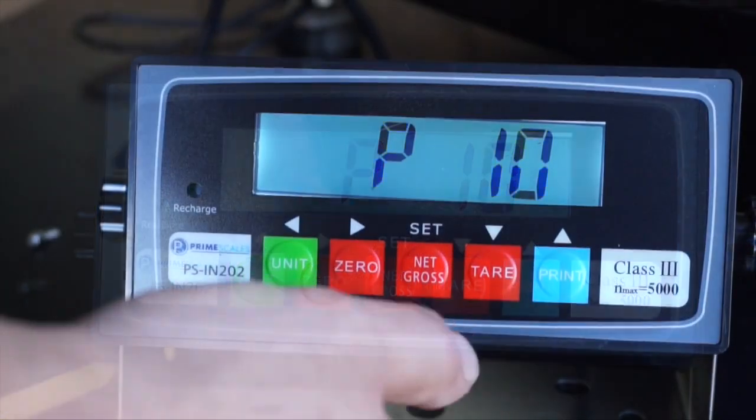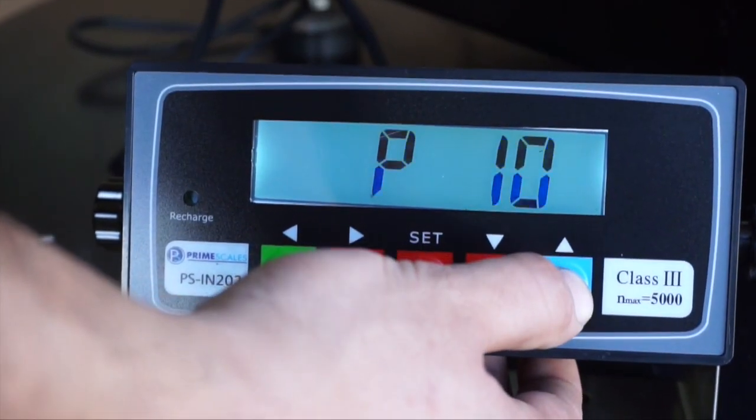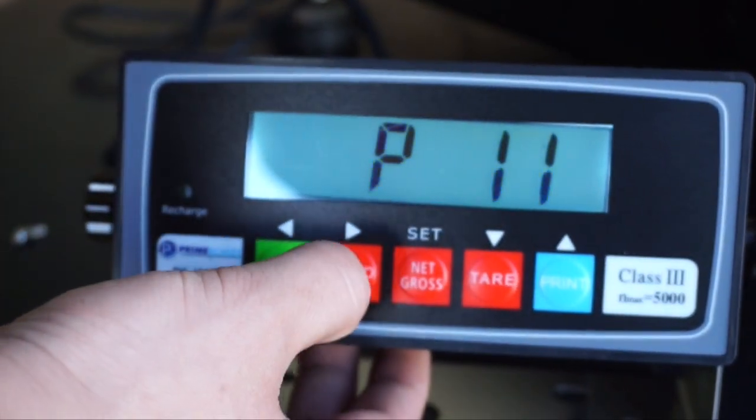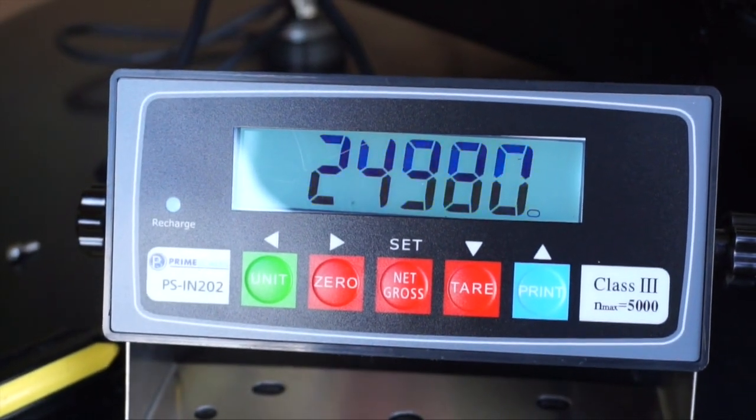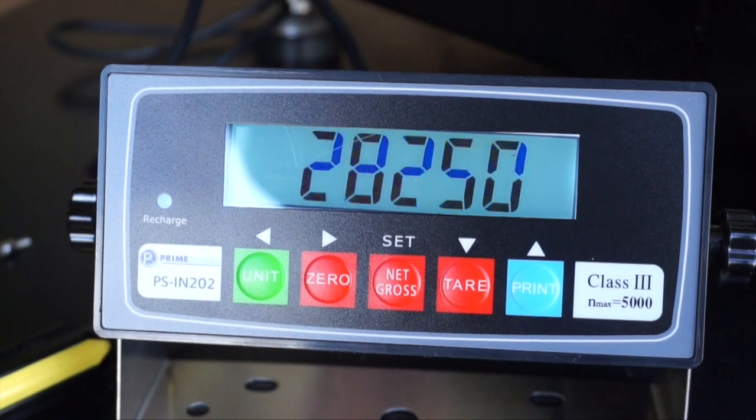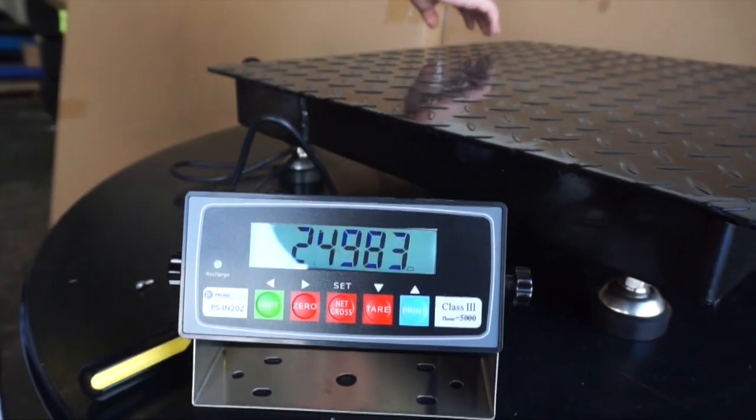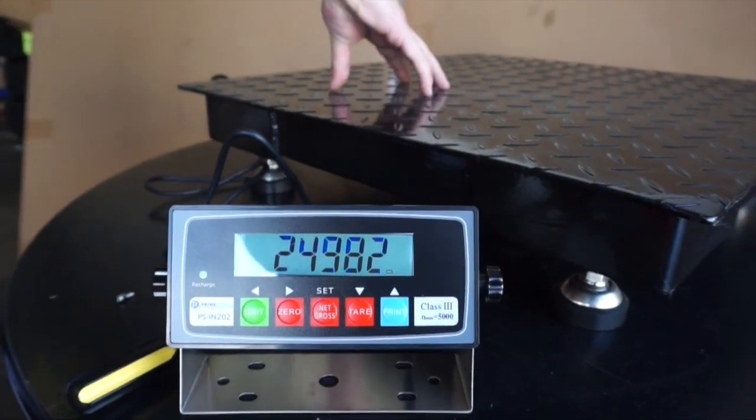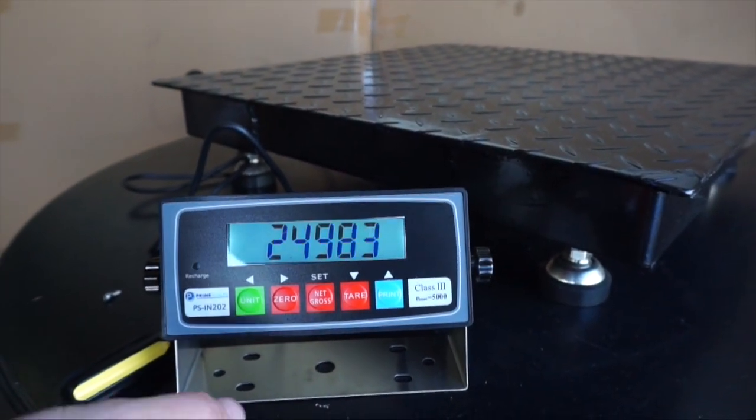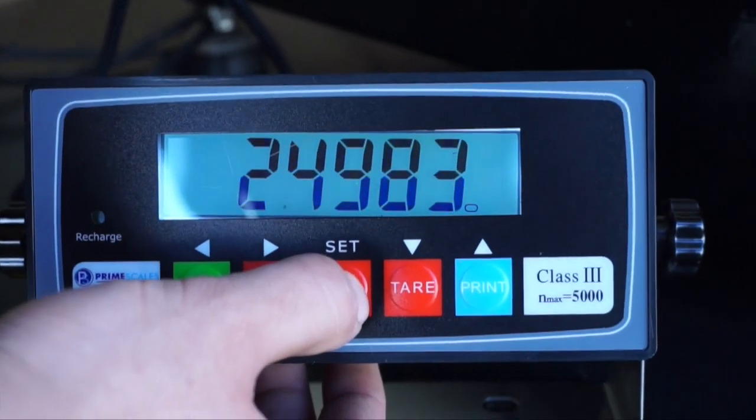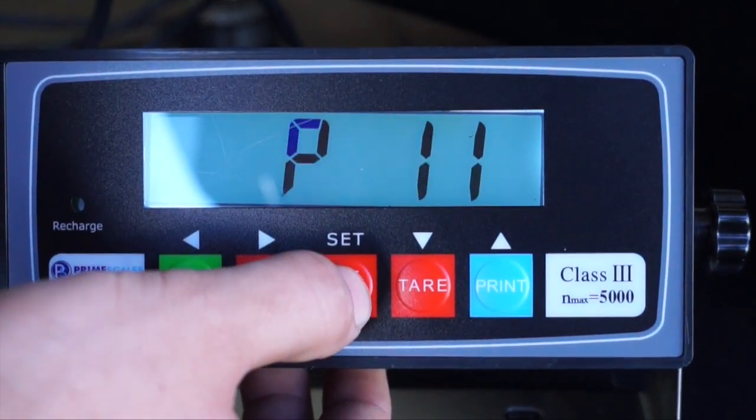Move up to P11 with the print button and press zero to enter. P11 is internal reading of the scale. Numbers should change when pressure or weight is added on the scale. After confirmation of live internal reading, wait for the numbers to stabilize and press net gross. You will automatically come out to parameter 11 or P11.